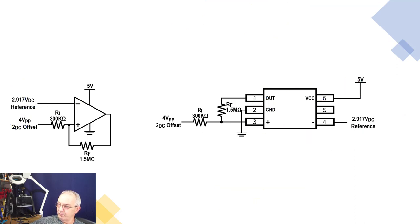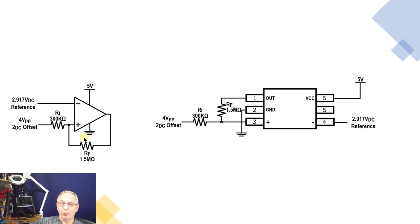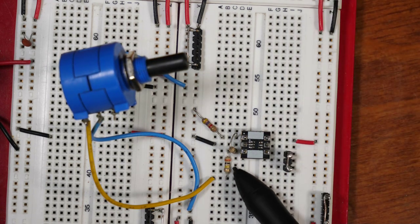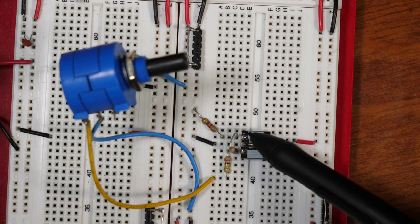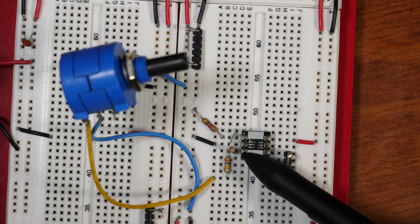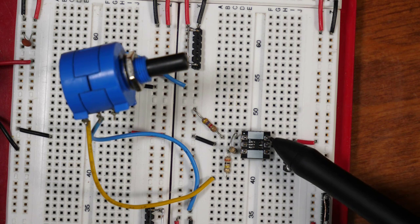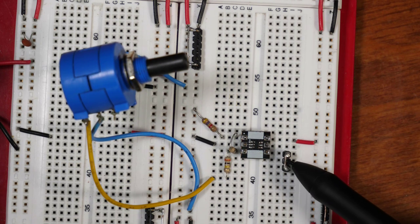Going back to the circuit, you can see how I came up with all the values: 2.917V for the reference, 300kΩ, and 1.5MΩ. These were derived from the starting parameters of how much hysteresis I wanted and what my trip point was. Here's the physical circuit: the 300kΩ input resistor, the 1.5MΩ feedback resistor between output and non-inverting input, and the 4.7kΩ output resistor. VCC is on pin 6, pin 5 is unconnected, and this is the inverting input.